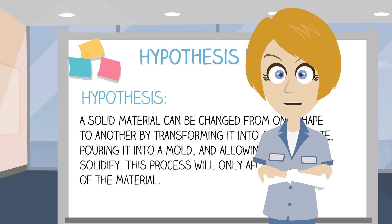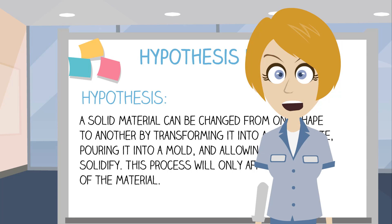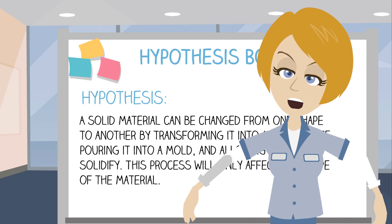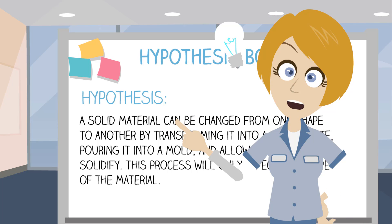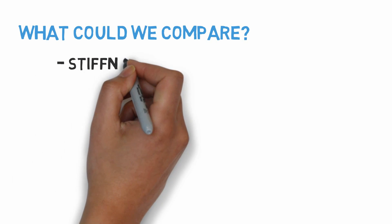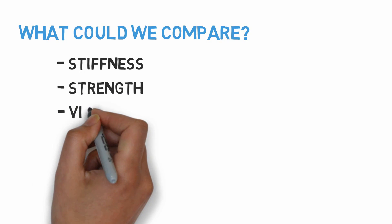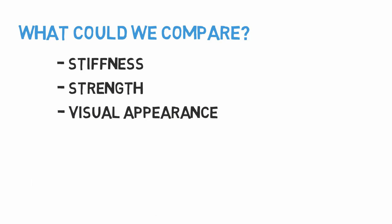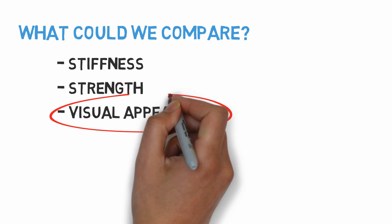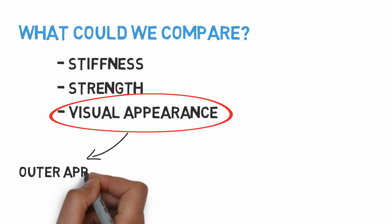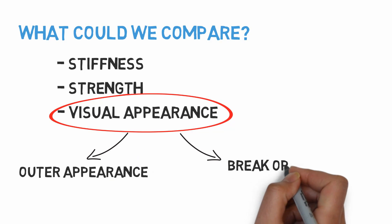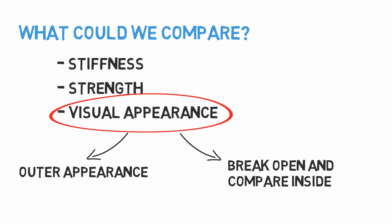The second half of the hypothesis requires a bit more investigation. We hypothesized that only the shape would be affected by this process, so we should find a way to compare the state of the material before and after it goes through this process. We could do this by comparing any number of material properties such as stiffness or strength, or even just by the visual appearance of the material. For our experiment, we will compare the appearance of the material both on its outer surface and inside the material after we break it open.